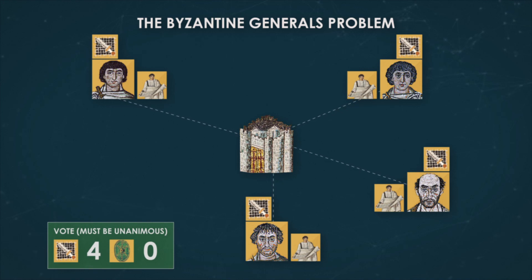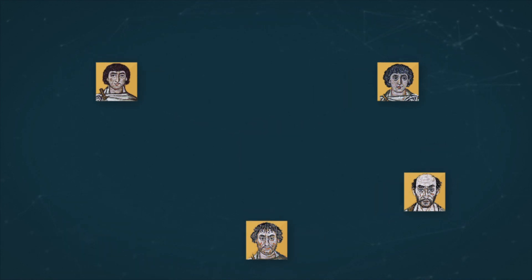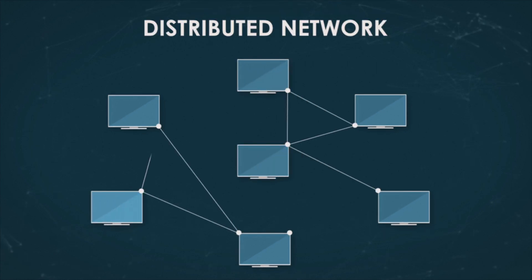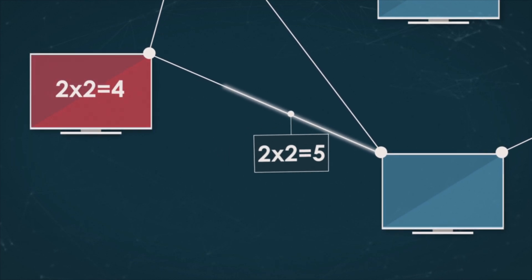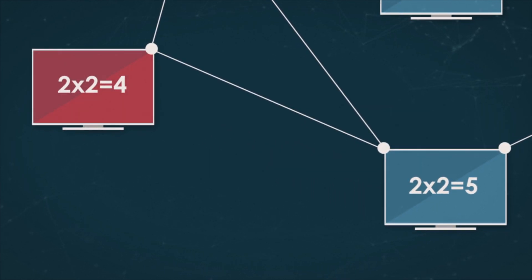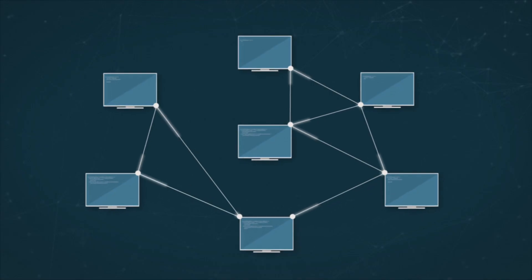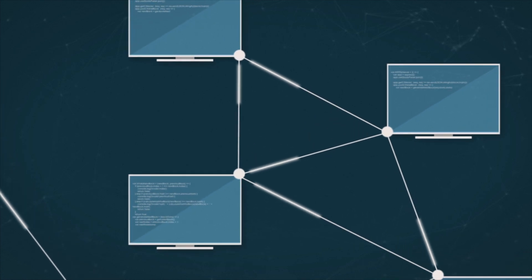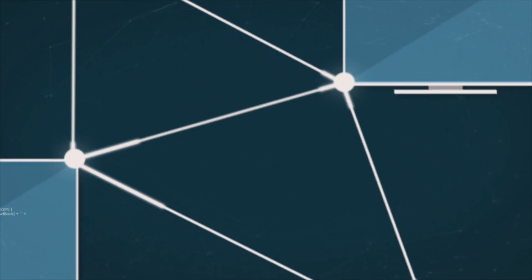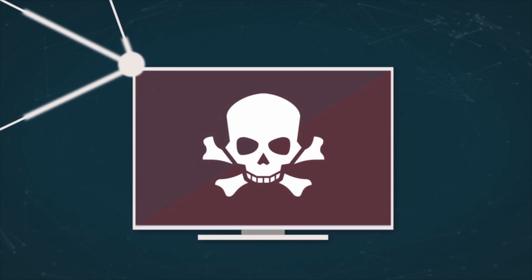One can easily understand where this abstract formulation came from by replacing the generals with the nodes of a distributed network, and the messengers with the connections between those nodes. Some nodes may transmit incorrect information, sometimes in order to interfere with the network, while connections even between functioning nodes may corrupt the signal or get lost. No exact parameters are set, so the problem might include several specific issues. A Byzantine fault is most commonly understood as any fault occurring in information transmission within a distributed network.